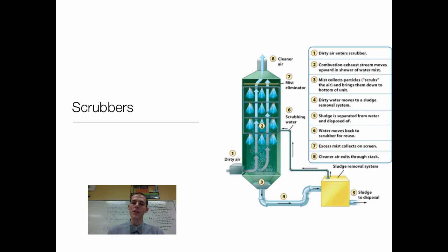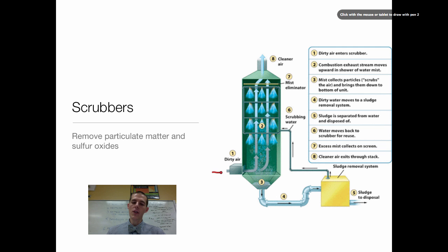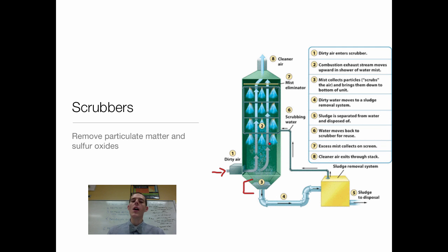The last technology is called a scrubber. Scrubbers have the ability to remove particulates and sulfur oxides. They work as a tower — dirty air flows in the bottom, and within the tower there are a bunch of misters that spray water onto the gas flowing through. The water interacts with the particulates, causes them to clump together and fall to the bottom, making those particulates too heavy to flow up. They fall down forming a sludge, which has to be dealt with later. In this process of wetting the particulates, some of the sulfur dioxide is also removed. So dirty air in, you wet it with a mister, all the particulates and sulfur oxides fall to the bottom, and clean air flows out of the smokestack.